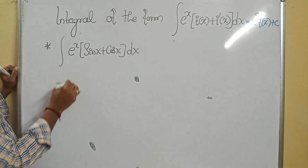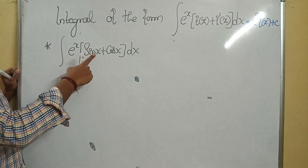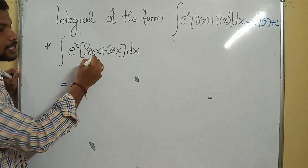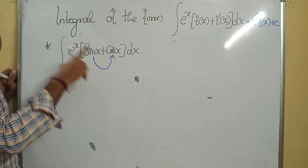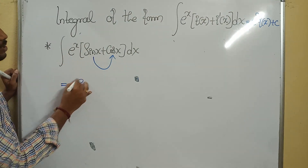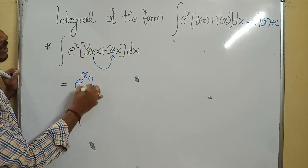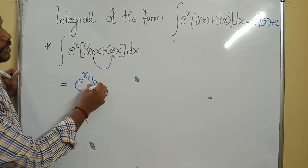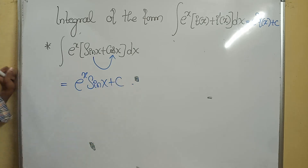Based upon this format: whenever eˣ multiplied with f(x) plus its derivative is given, write the answer as eˣ times that function plus c. Here, eˣ is as it is, and the derivative of sin(x) is cos(x). So the answer to this question is eˣ·sin(x) + c.